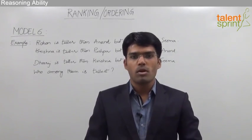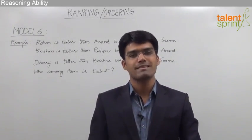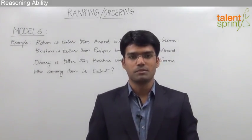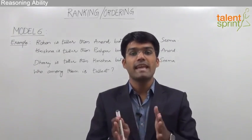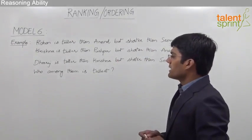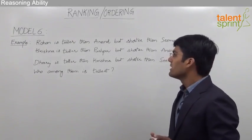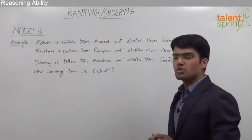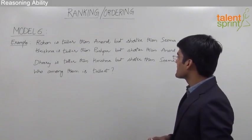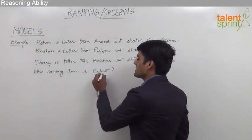Let us take another example from ordering where we have to find out the tallest or the shortest person among the given group, or the heaviest or the lightest — that is, we are trying to find out the extreme ends of the group. The question here is: Rohan is taller than Anand but shorter than Sima. Krishna is taller than Pushpa but shorter than Anand. Dheeraj is taller than Krishna but shorter than Sima. We need to know who among them is tallest.